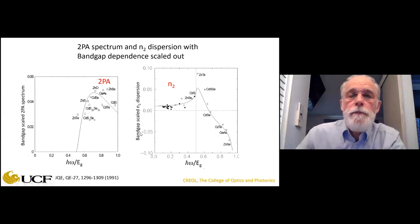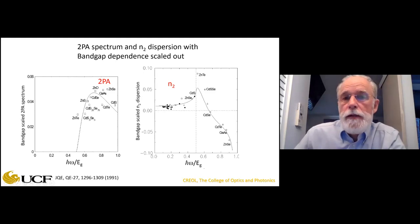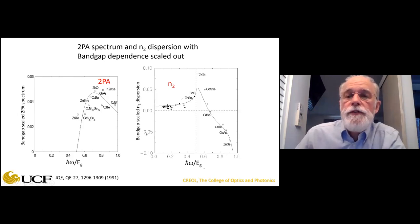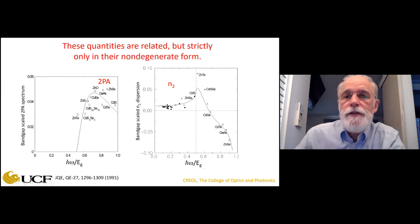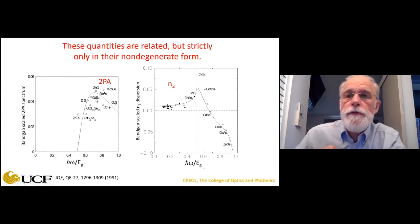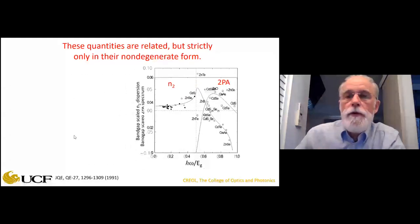You can also look at the band-gap-scaled nonlinear refractive index — multiplied by E_gap to the fourth power. Well below the two-photon absorption edge, it's nearly dispersionless. It has a peak near the two-photon absorption edge, and then at about two-thirds of the gap, it turns negative rapidly. These are related to each other in their non-degenerate form — two different frequencies — by Kramers-Kronig relationships.